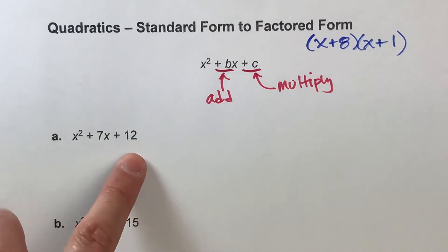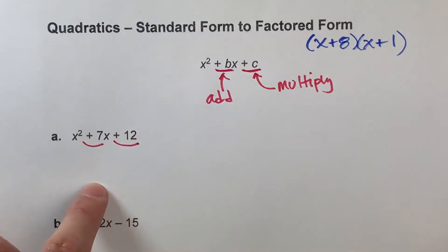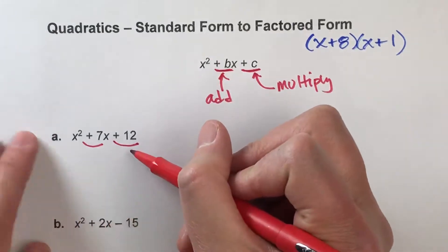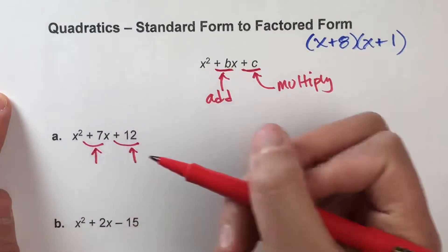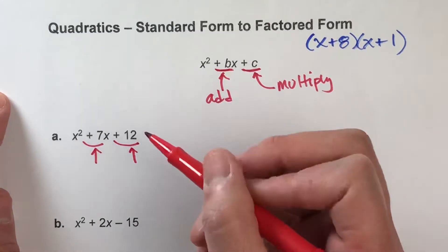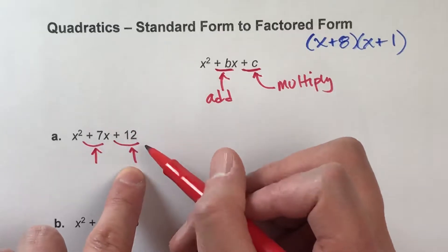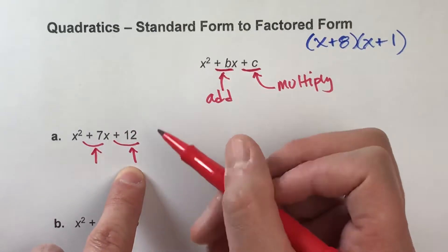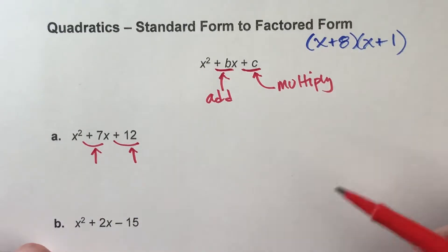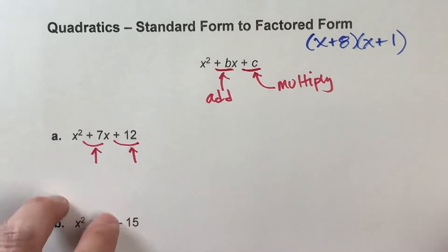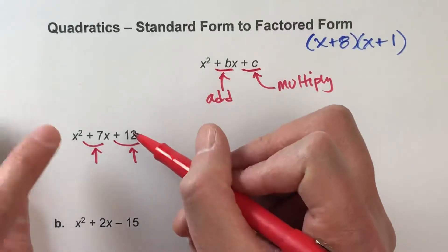For example, x squared plus 7x plus 12. We're looking at positive 12 and positive 7, so we need two numbers that multiply to get positive 12 but add to get positive 7. There are a lot of different combinations that could work, so if you're not sure, it helps to just start listing them out.